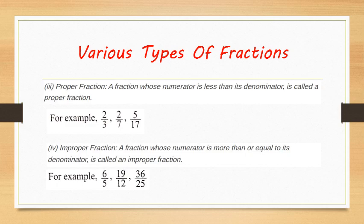Improper fractions are those fractions in which the numerator is more than or equal to its denominator. For example, 6 by 5 — here 6 is greater than 5, so it is an improper fraction. Similarly, 19 upon 12 and 36 upon 25 are also improper fractions. All natural numbers are also improper fractions — for example 5 by 1, where 5 is greater than the denominator 1.